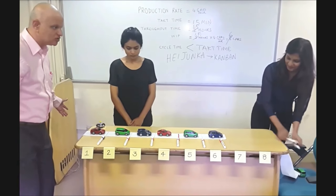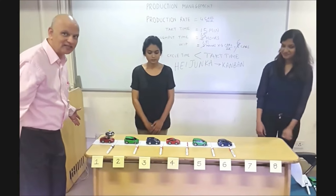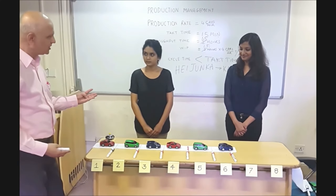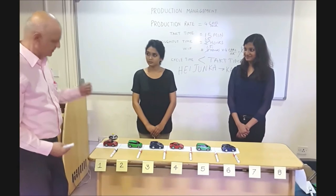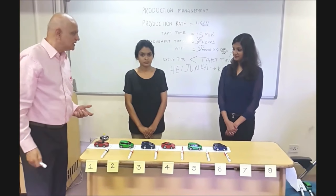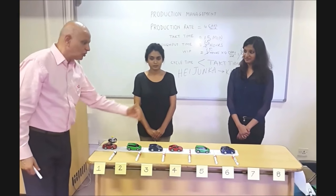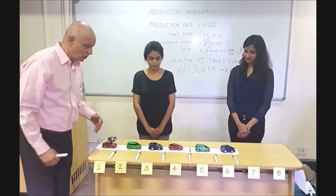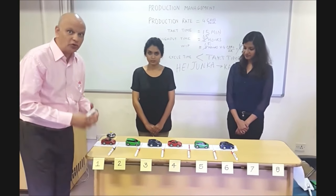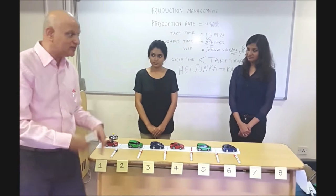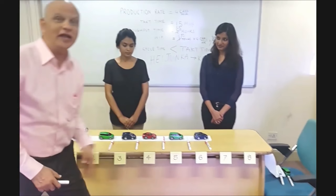We have shortened the conveyor in a sense. WIP down. What is the impact on cost? Reduces. Which cost? Capital reduces. And your throughput time is down, so you are now in a position to produce faster in case you once again put the two back.